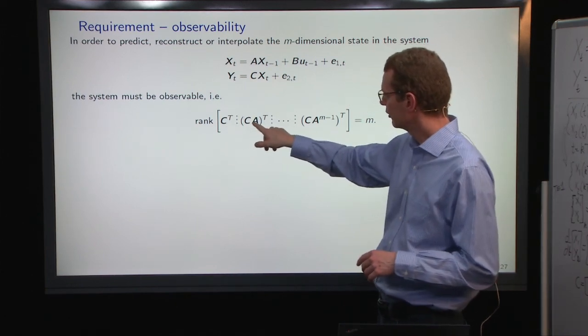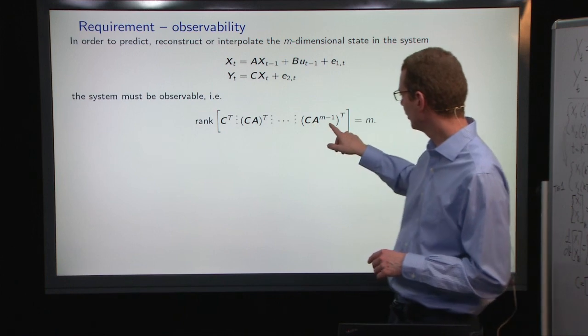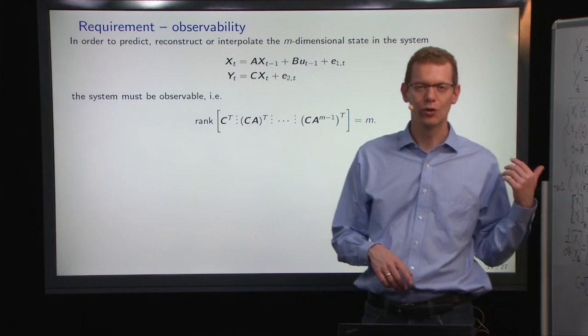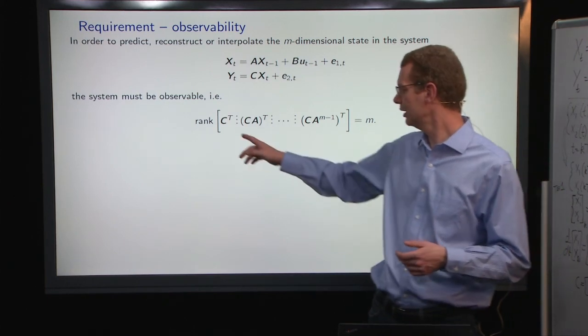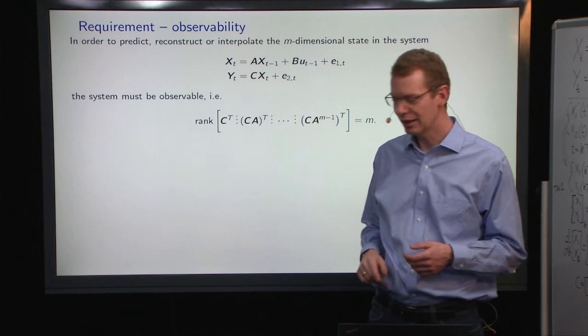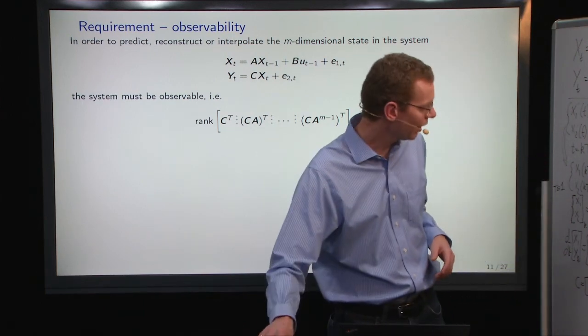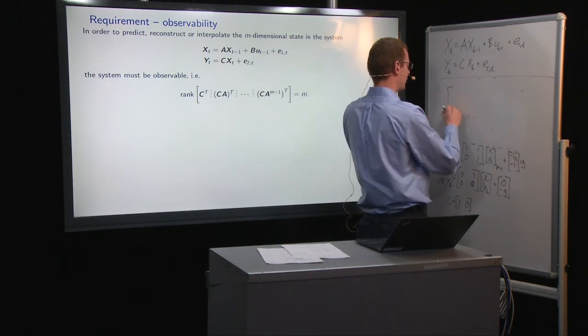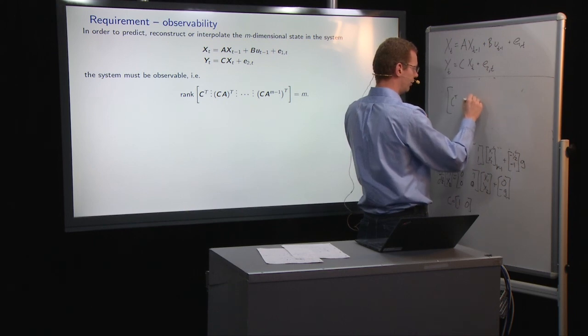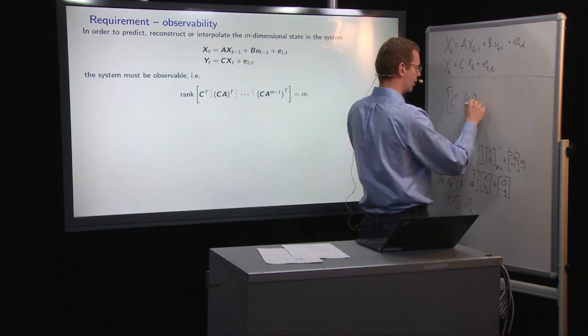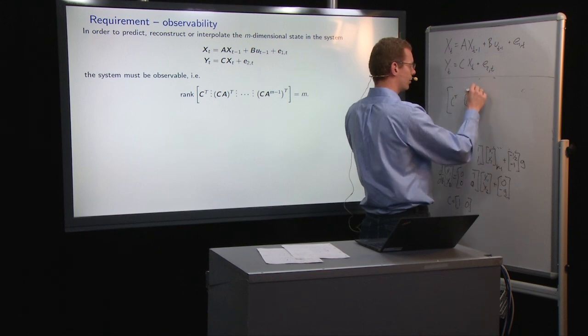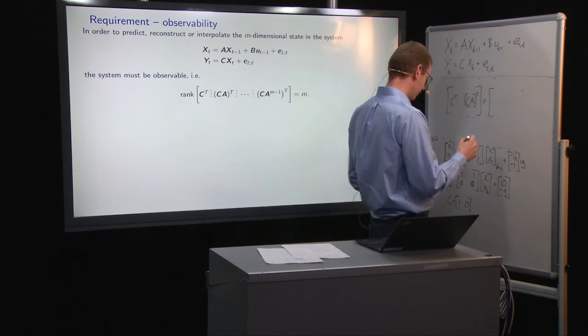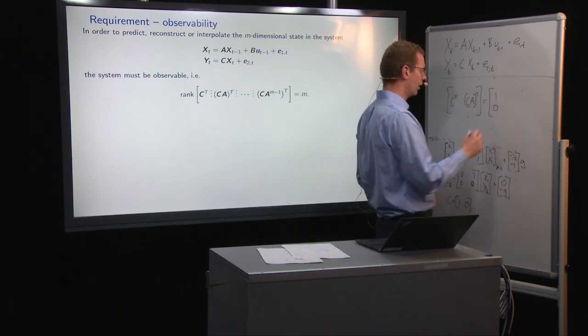So we have to look at the rank of CT as the column there, and then the column with C times A, and that times transpose, up to get to the order of M minus one, A to the M minus one power. In this case, we have a second-order system, so we just need C transposed and CA transposed. And if we do that, we look at C transposed and CA transposed matrix here, then C transposed, that's just a one and a zero, we have it down here.